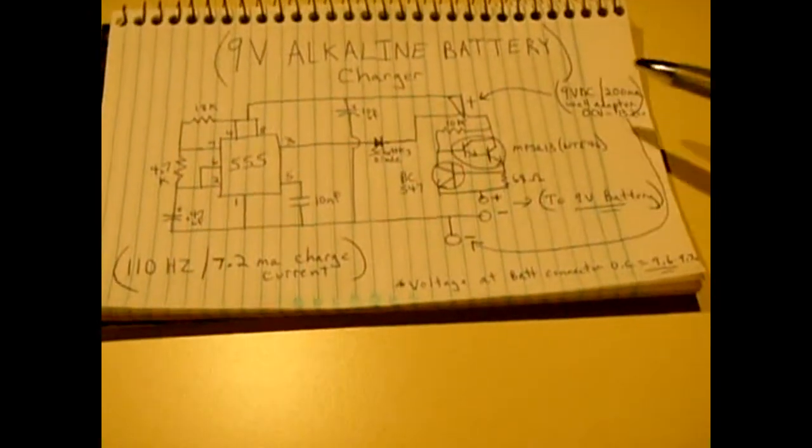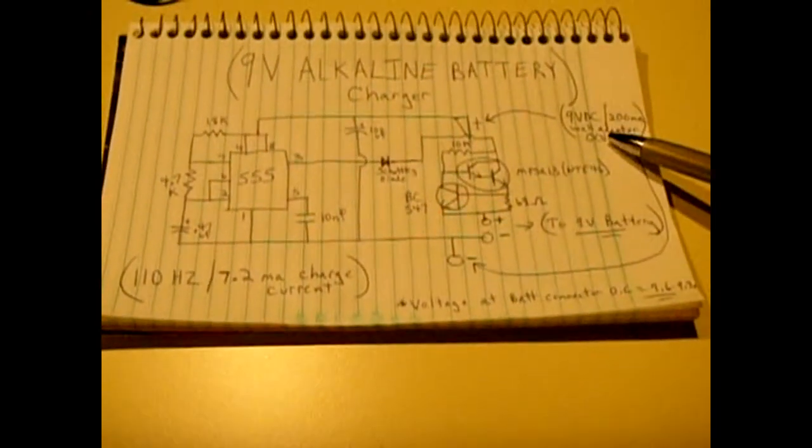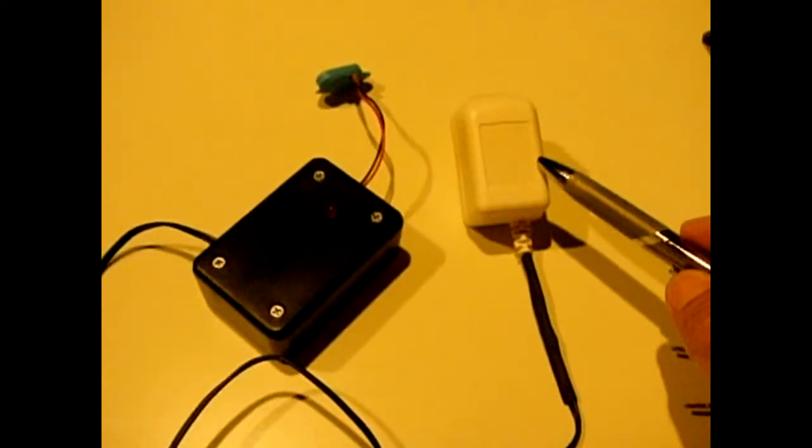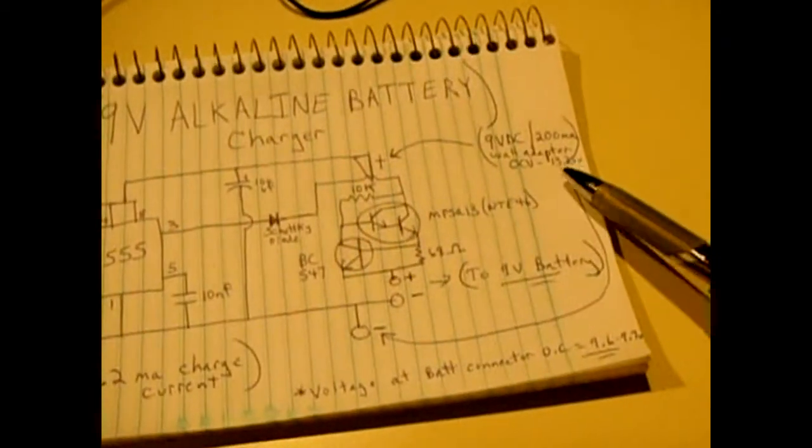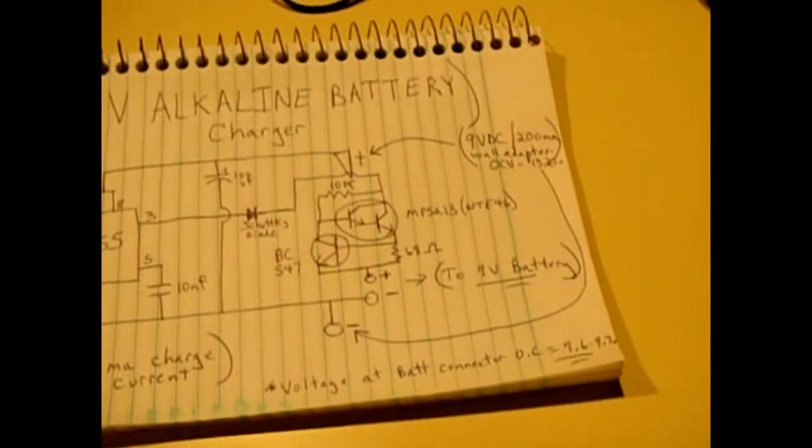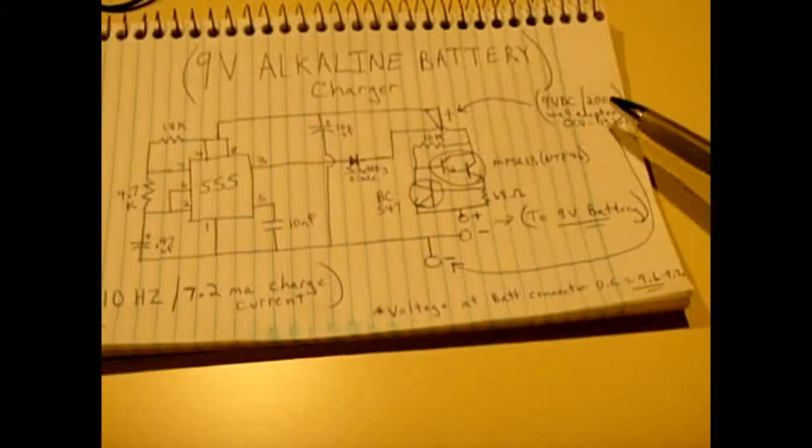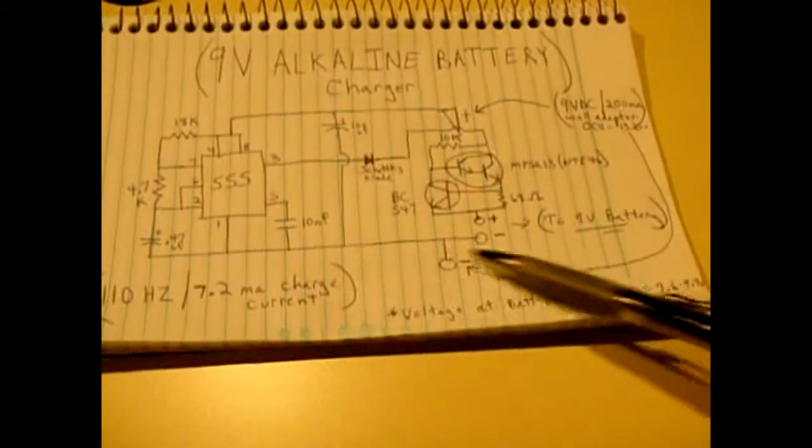Now for this circuit you're going to want to use an old wall transformer. I had one laying around for a cordless telephone, this one is a 9 volt 200 milliamp, so 9 volt DC 200 milliamps and the open circuit voltage of that is roughly 13.25 volts.